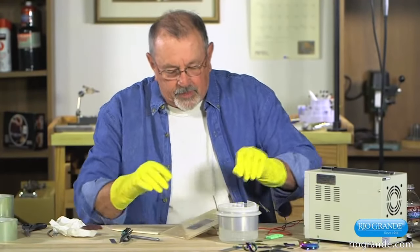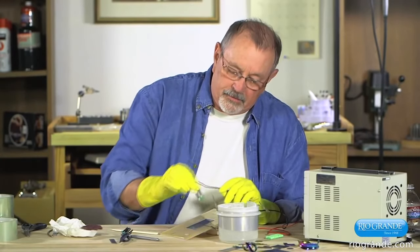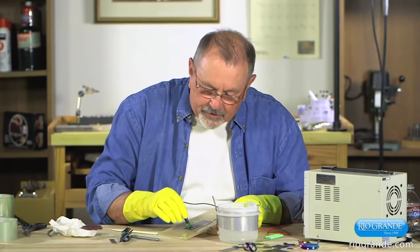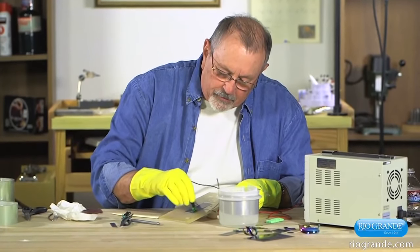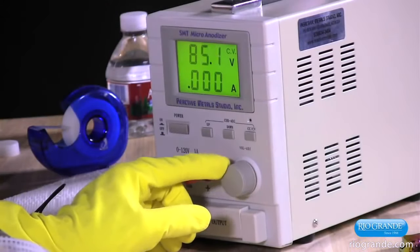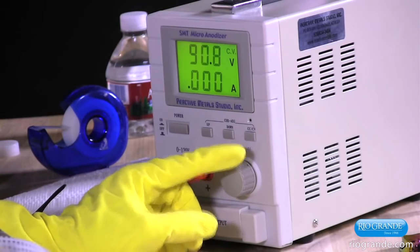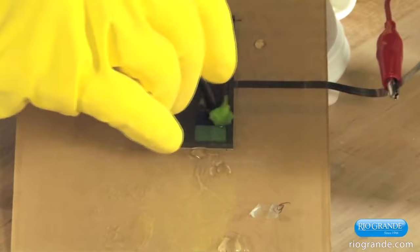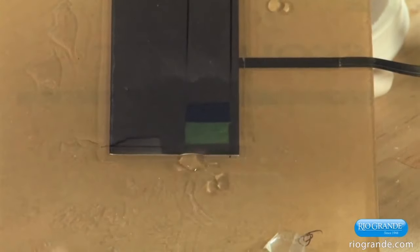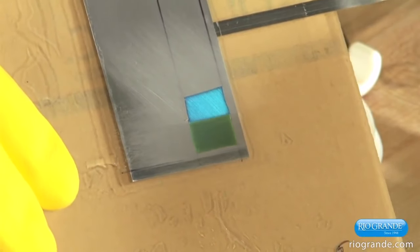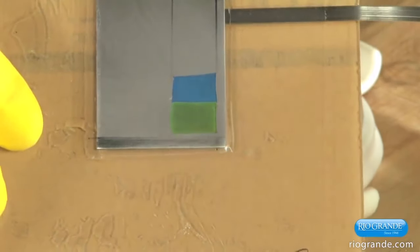So here we go. Anode connected. Cathode and our trusty sponge. And I'm just going to turn this up to like 60 and run it up through those colors really quick. And then I'm going to go to 90 volts. And I'm going to paint it to 90 volts. And now we have both the 100 and a 90 volt color. Producing the 90 volt did not change the 100 volt.